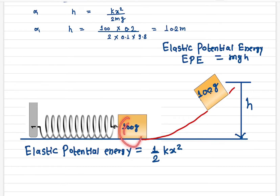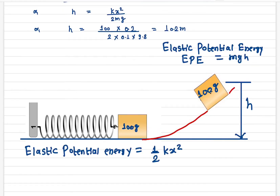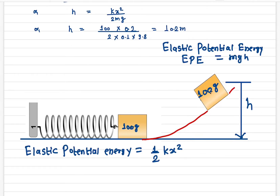At the initial point, it is all elastic potential energy. When you release the spring, that elastic potential energy changes into kinetic energy, and the kinetic energy then changes into gravitational potential energy. At the maximum height, the block has only gravitational potential energy. If the block is somewhere in between, it has both kinetic energy and gravitational potential energy.